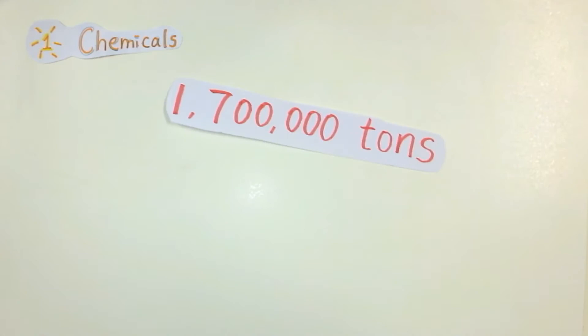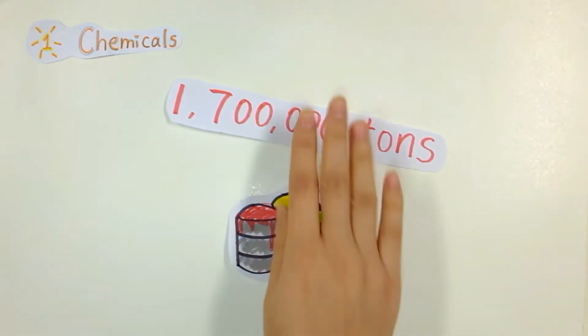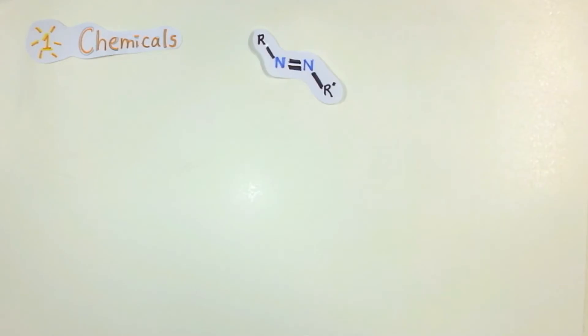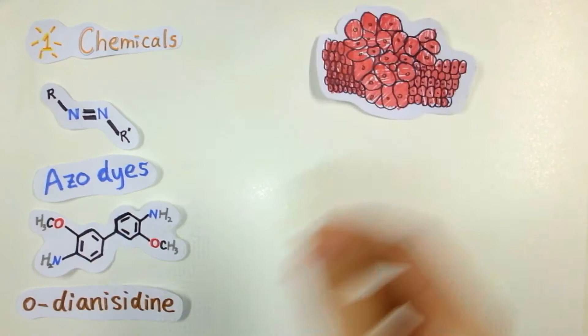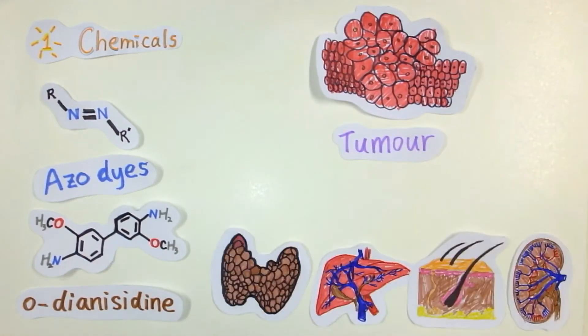There are 1.7 million tons of various chemicals used in the dyeing process. The most concerned dyes are azo dyes. Some of the aromatic amines released from azo dyes are carcinogenic. For example, o-anisidine can increase tumor incidence in many organs.